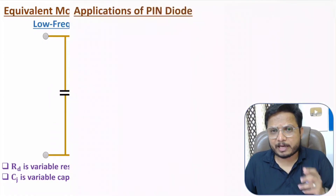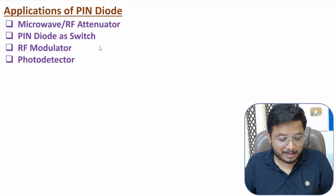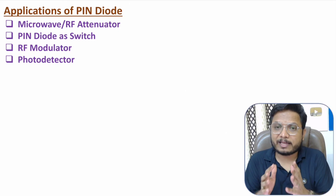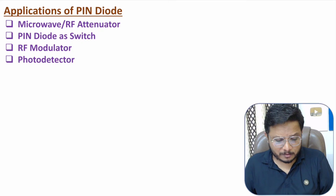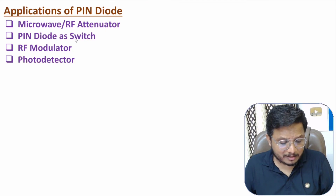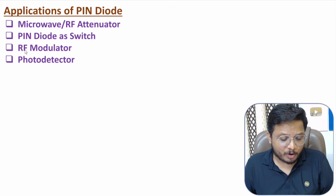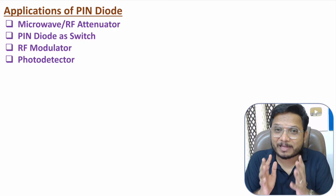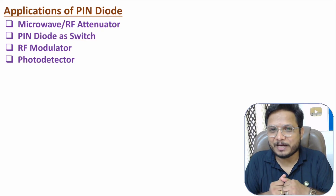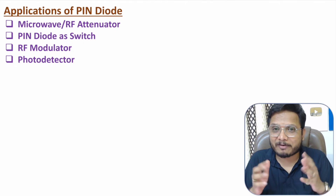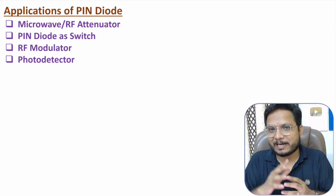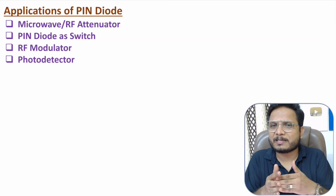PIN diode can be utilized as a microwave RF attenuator — in forward bias it acts like a variable resistor, enabling attenuation. It can also be used as an RF switch and as an RF modulator. Major applications also exist in photo detection, though that topic belongs to optical communication and will be covered in a separate video. In this video, all discussion has been with respect to microwave and RF engineering.